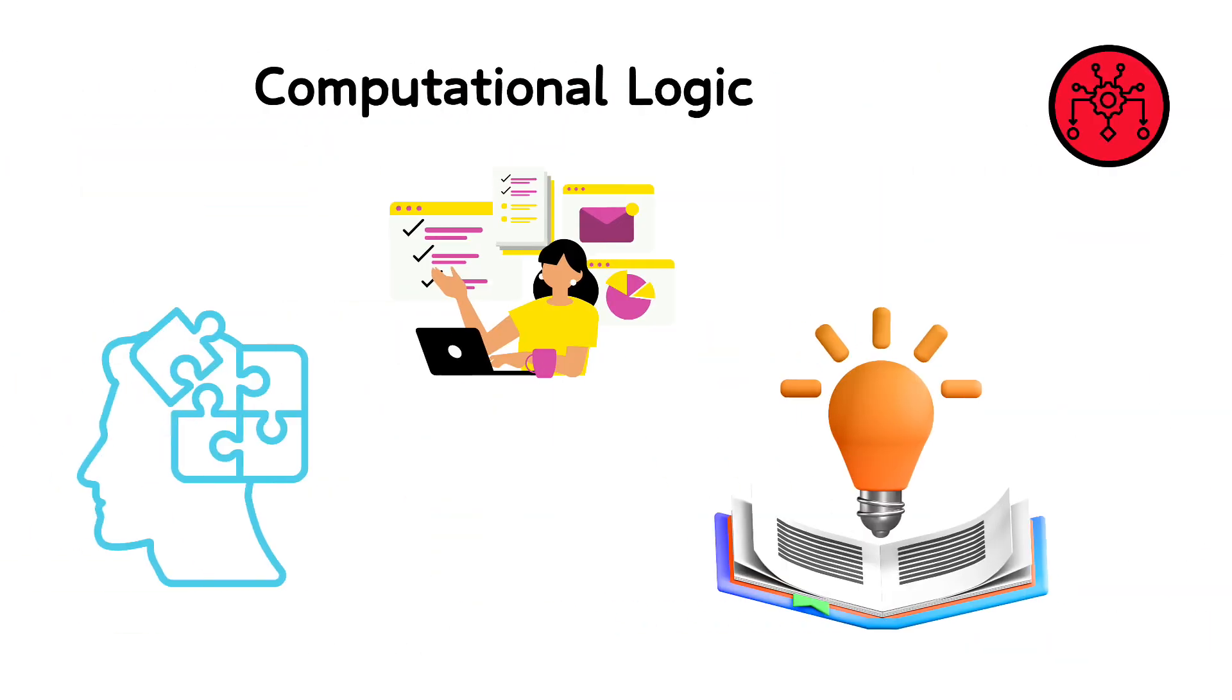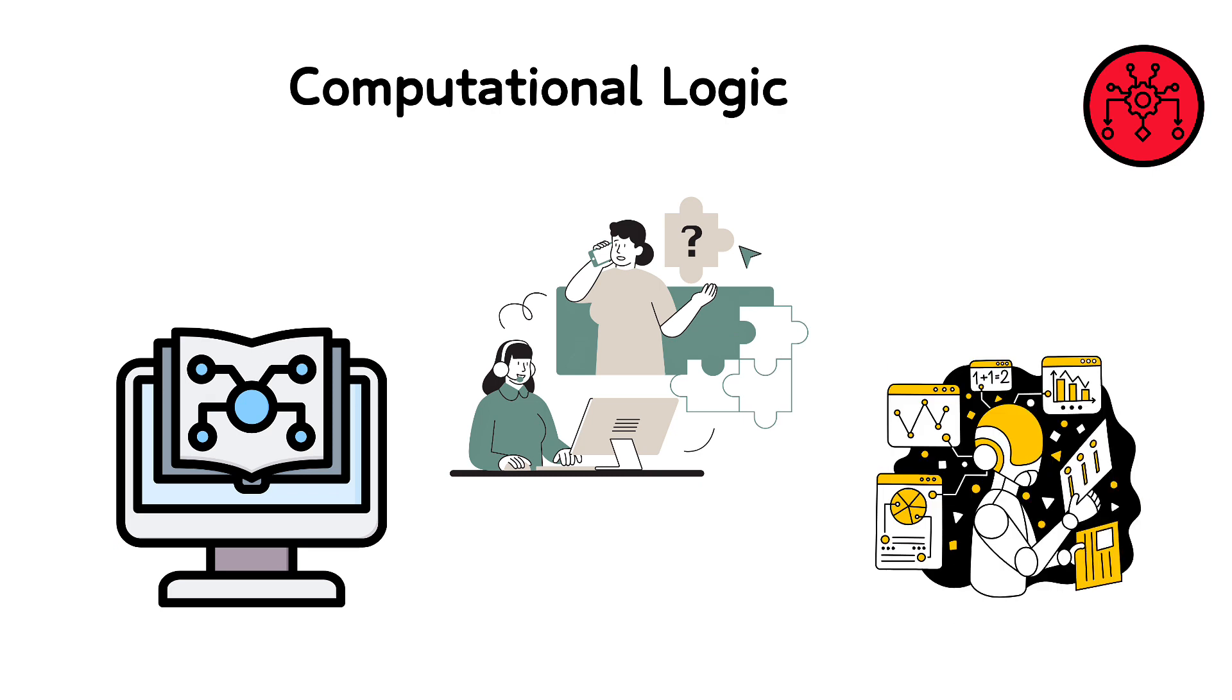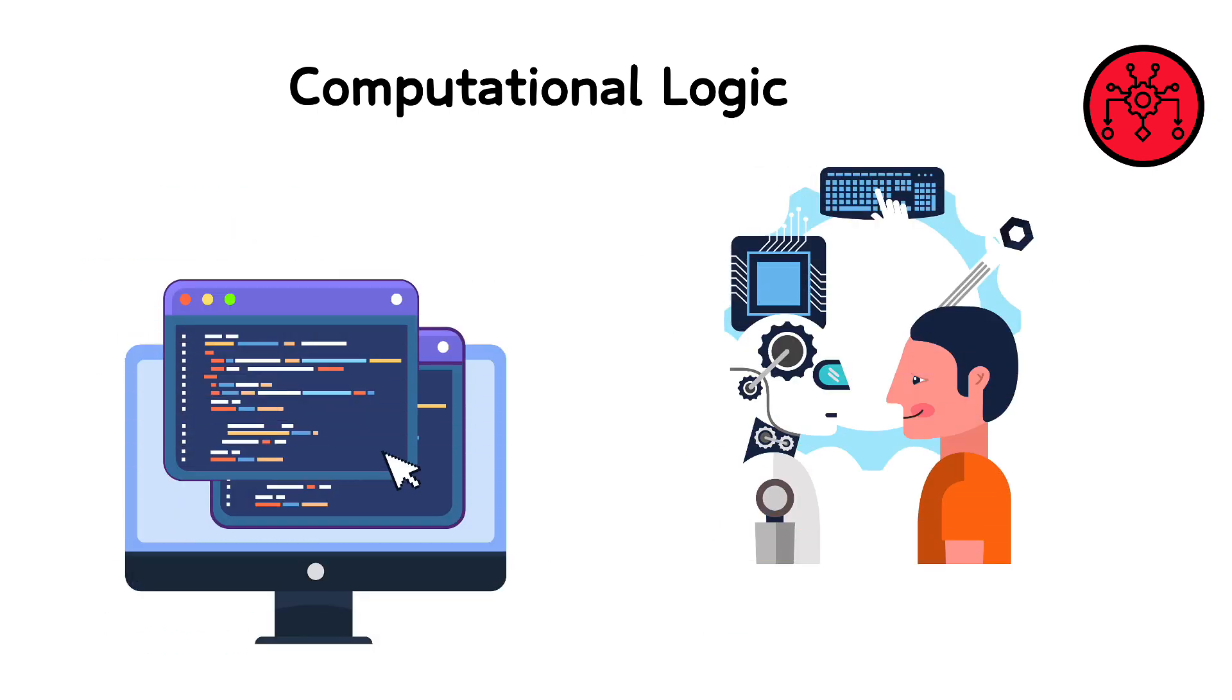Computational logic applies the principles of logic to the field of computation. It encompasses techniques and theories from both computer science and logic to solve problems related to automation, theorem proving, and algorithm design. This logic is fundamental in developing software and hardware systems that perform logical operations, automate reasoning, and make decisions based on logical processes. Computational logic forms the backbone of programming language design, verification of software, and the implementation of intelligent systems.